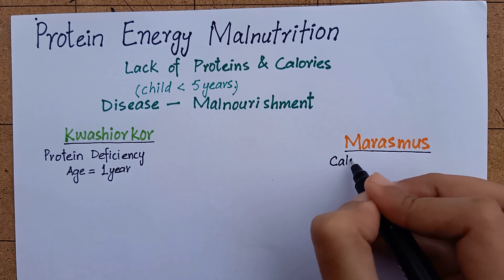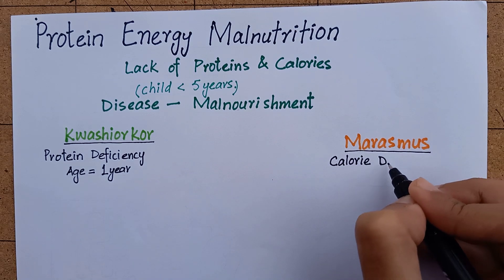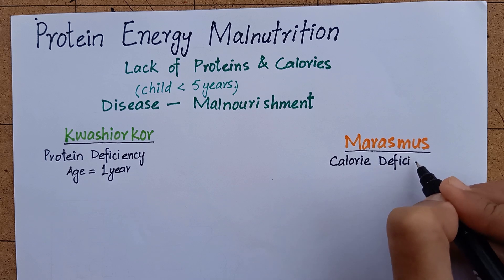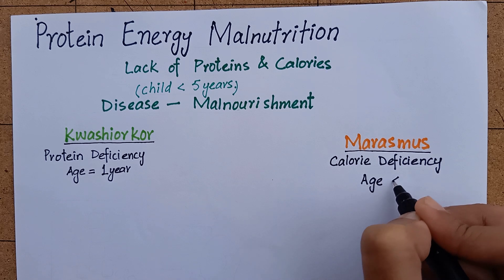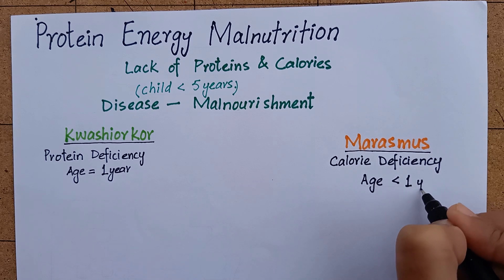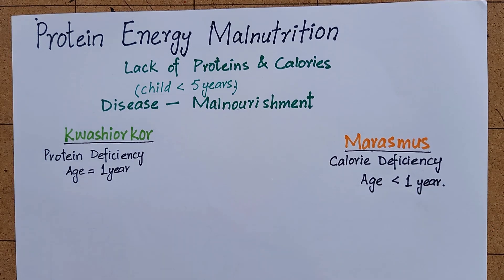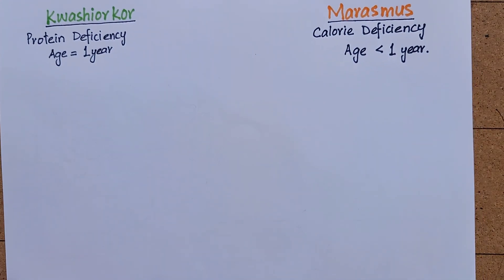On the other hand, marasmus is a manifestation of severe malnutrition in which diet is deficient in calories but no nutrition is entirely absent. It is usually seen in children younger than one year of age when breast milk is supplemented with watery porridges which are deficient in calories and proteins.